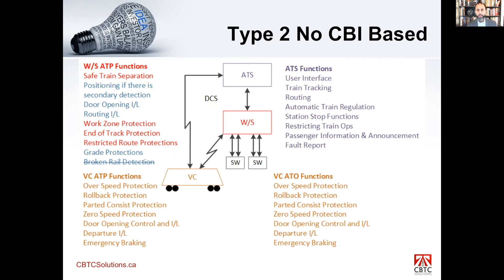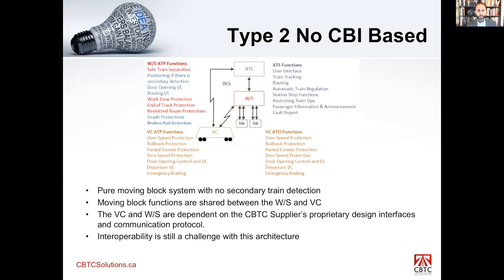In a Type 2 architecture, there is usually no secondary train detection — it is a full CBTC system with full moving block principles applied, although secondary detection can be added to the wayside. The moving block functions are shared between the wayside and the vehicle controller. The interface between the vehicle controller and the wayside remains proprietary to each supplier, so interoperability is still a challenge — taking the wayside from Supplier A and connecting it to the vehicle controller of Supplier B is difficult, though slightly easier than the CBI-based architecture.